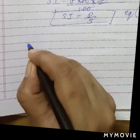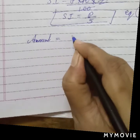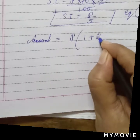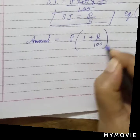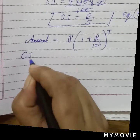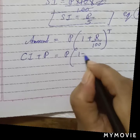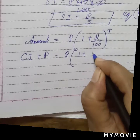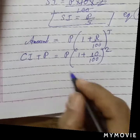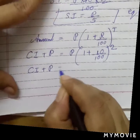Now let's find the compound interest. We know the formula for calculating amount: Amount = P × (1 + R/100) raised to the power T. The amount equals compound interest plus principal. Here we have P × (1 + 10/100)², which is P × (1 + 1/10)². Let's work it out.